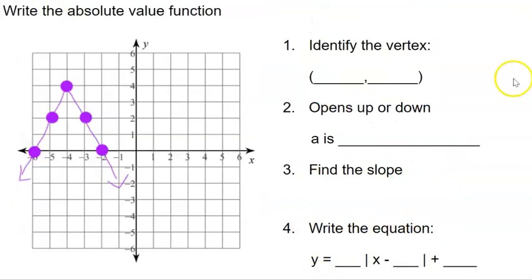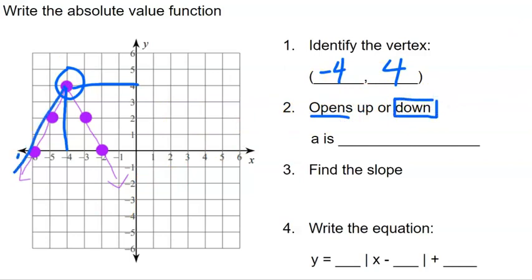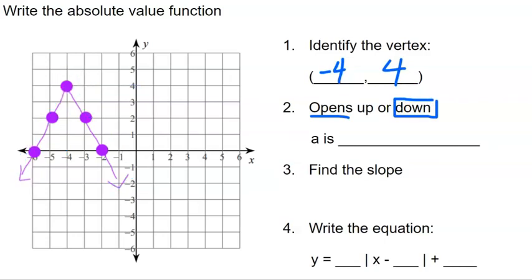Let's do another example: write the absolute value function. Again, we start by identifying our vertex, which in this case is the topmost point. Our vertex is negative four for our X value and four for our Y value. Then we answer: does it open up or open down? In this case it opens down, going away from the vertex in a downward direction.